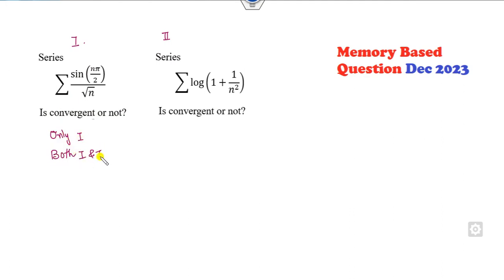A very simple approach - always remember whenever there is a term of sine and cosine divided by something, I gave you a shortcut tip: always write it as aₙbₙ as a series.